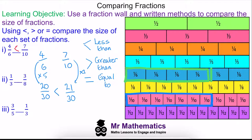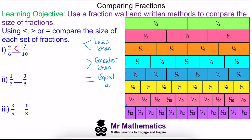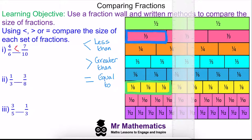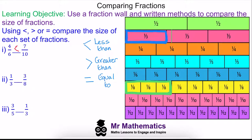Okay, let's try question two. We'll begin by showing one third on our fraction wall, highlighted in blue, and three eighths highlighted in green. We'll use our ruler to see that one third is less than three eighths, so this will be the less than symbol.